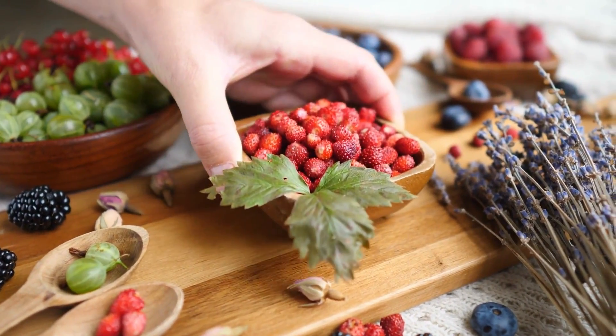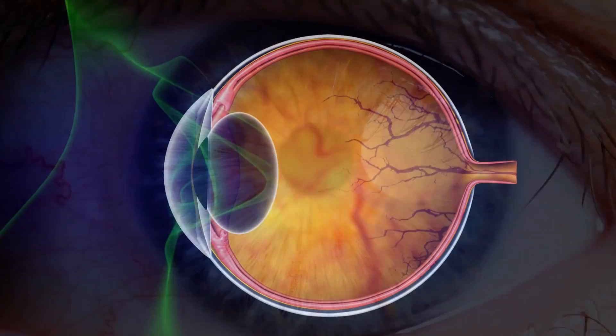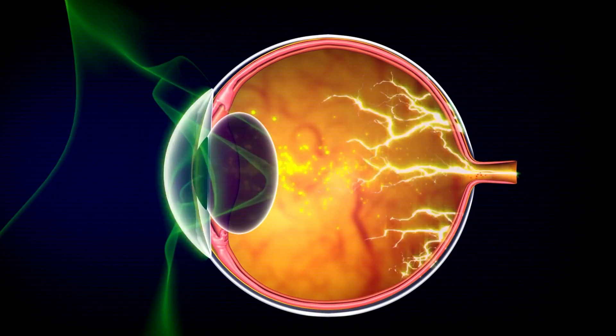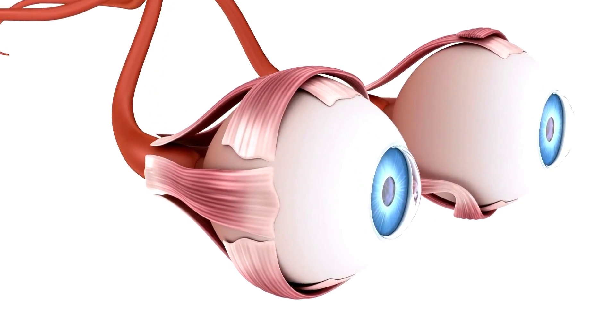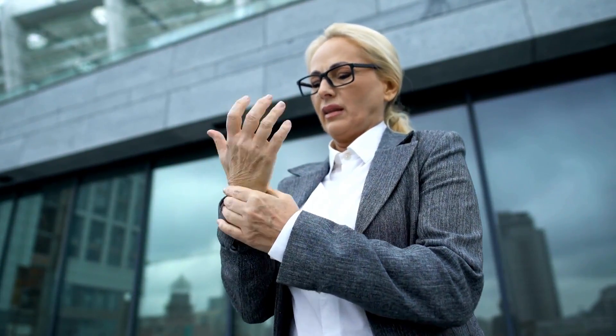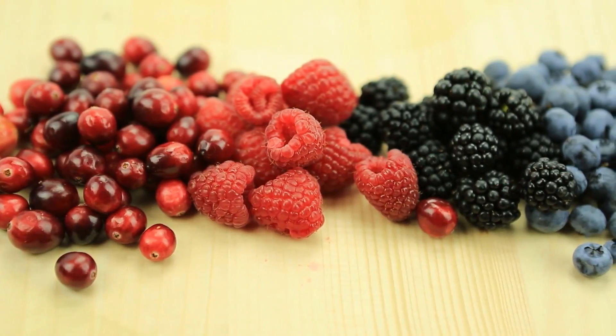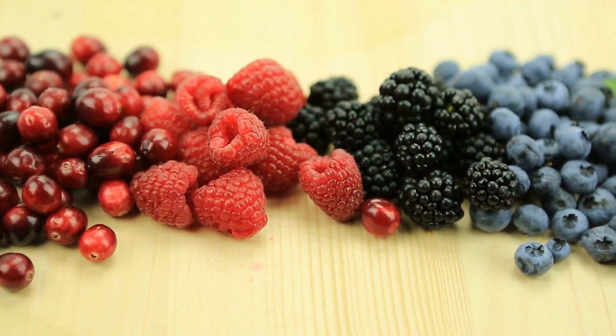The antioxidants in berries, particularly anthocyanins, may also benefit eye health. They can help protect the eyes from oxidative damage, reducing the risk of age-related macular degeneration and cataracts. Chronic inflammation is associated with many age-related diseases, including arthritis and certain cancers. Berries' antioxidants and anti-inflammatory properties can help reduce inflammation in the body.